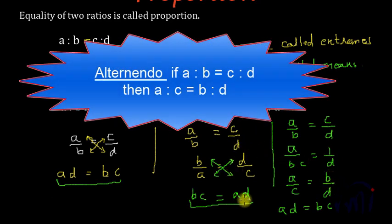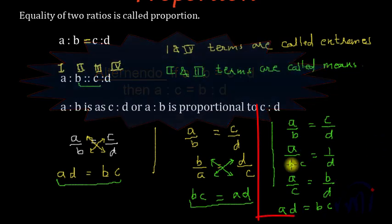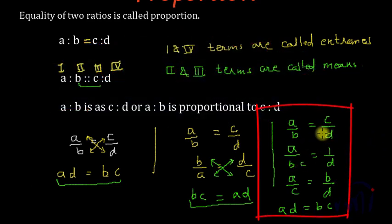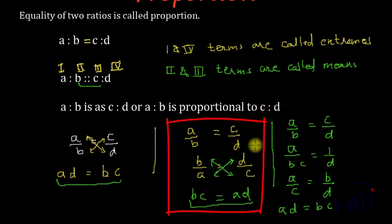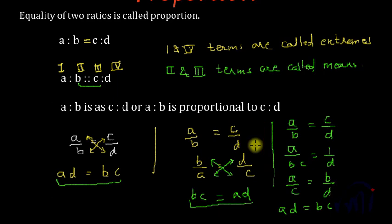So invertendo is where we invert the terms of the proportion, and alternando is where we alter the terms. This is the first video on proportion where we have learnt what proportion is and a few properties. In the next video, we will learn more properties — componendo, dividendo, and componendo-dividendo — and then continued proportion. Keep watching MathSmart, bye-bye till then.